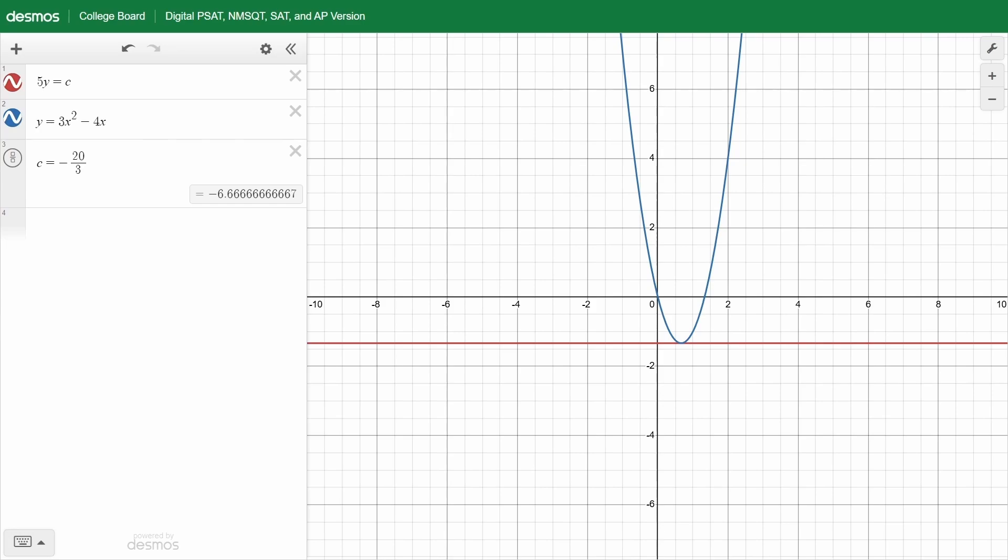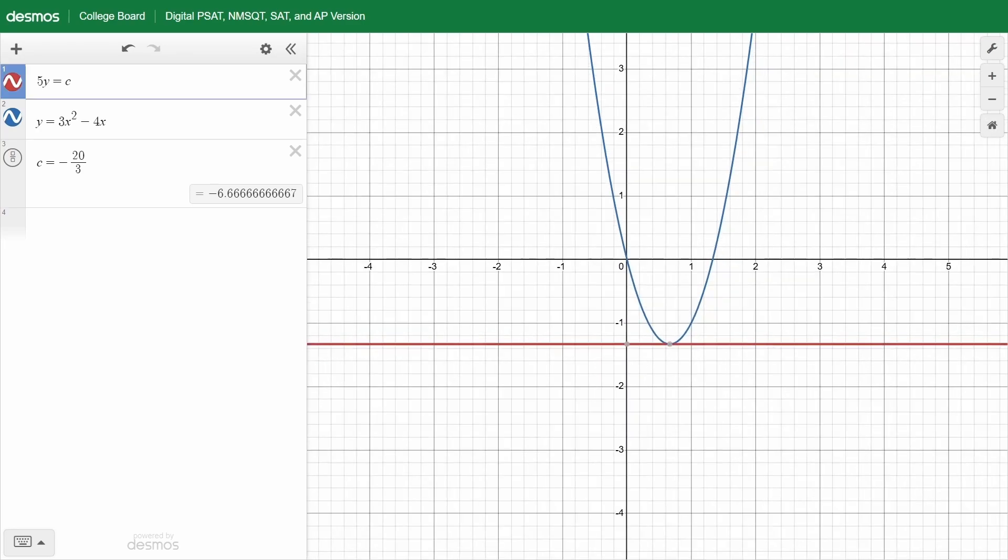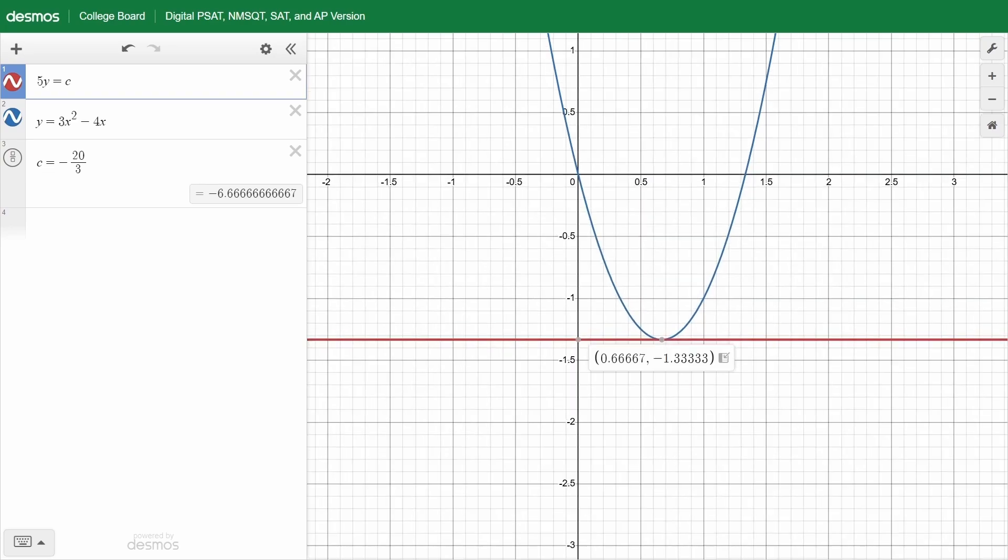Something kind of neat you can do now is - and I always struggle with this - you sometimes have to zoom in and mess around to find where a line meets a quadratic at a tangent. Well now what's kind of convenient is you could click on the point.